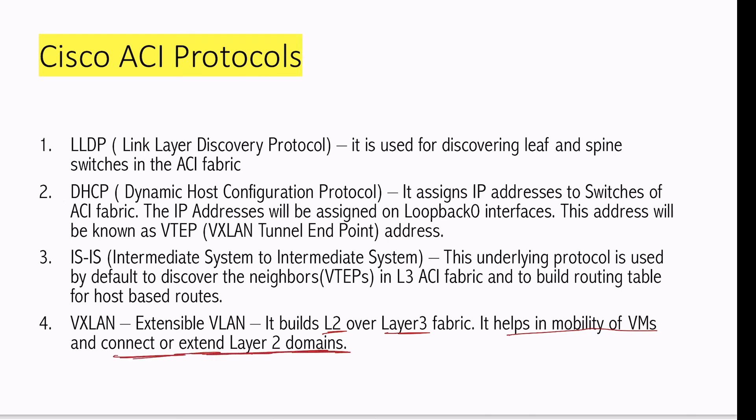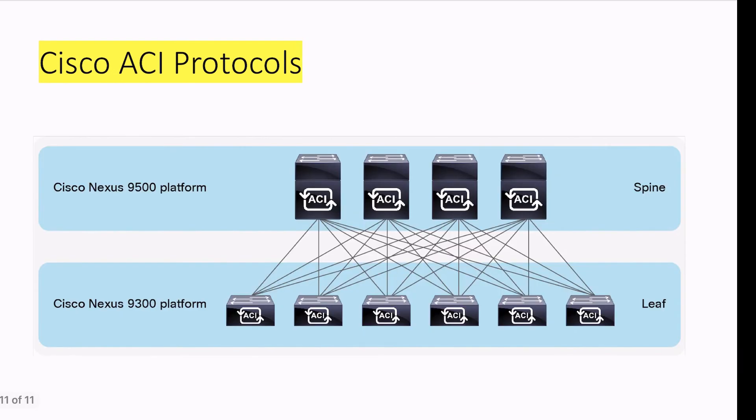And there is one more protocol which is used, known as COOP, Council of Oracle Protocols. It is basically used for discovering the endpoints. Means the information about the endpoints which are connected to leaf or leaf switches will be known to all of the spines. Like this, there is one server connected. This leaf will be aware about. And similarly, there is one server 2 connected here.